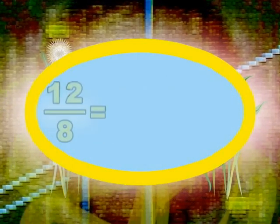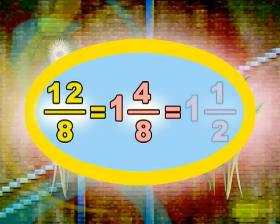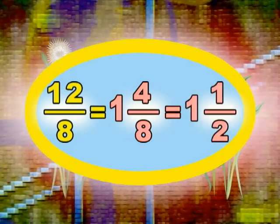To get its simplest form, twelve divided by eight is equal to one and four-eighths or one and one-half.